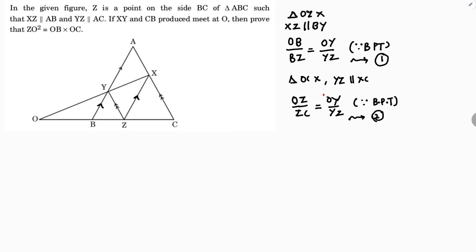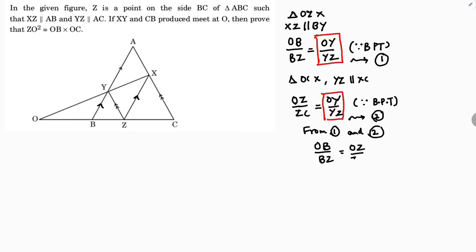From Equations 1 and 2, OY by YZ is common to both. Things which are equal to one another are equal to each other. So from Equation 1 and Equation 2, I can conclude that OB by BZ equals OZ by ZC. Now, OC is the full part in the big triangle, and we need OZ squared.